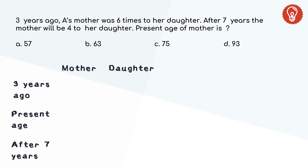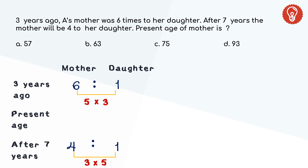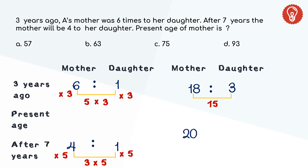3 years ago, mother was 6 times the daughter's age. Hence the ratio of their ages was 6 to 1. And 7 years hence, it is 4 to 1. Solving this like the previous question: difference between 6 and 1 is 5, and difference between 4 and 1 is 3 — the difference is not the same. We need to make it the same by multiplying 5 by 3 and 3 by 5. For which we need to multiply 6 to 1 by 3, and 4 to 1 by 5. Then the new ratios are 18 to 3 and 20 to 5.